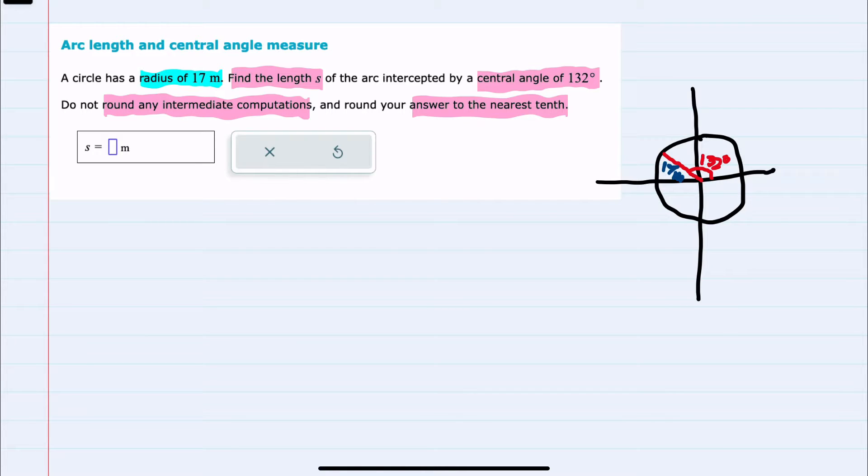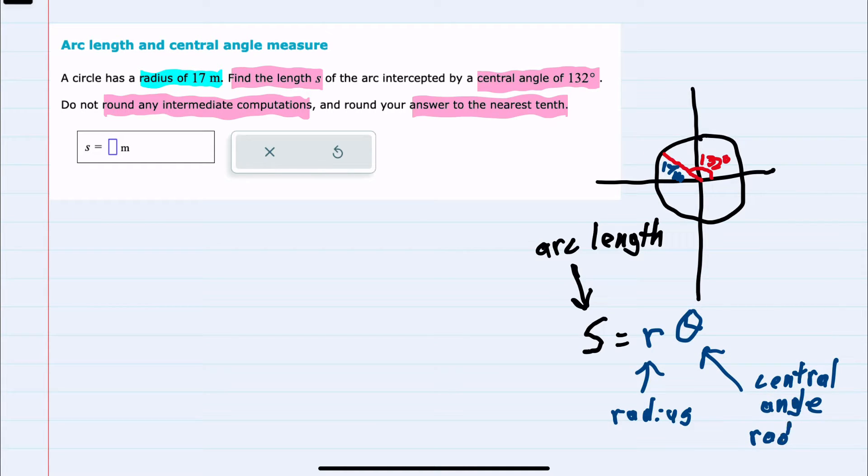And we have a formula for arc length. We use the variable S to represent arc length, and we say that S is equal to the radius R times the central angle theta. However, the central angle must be in radians.